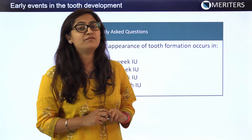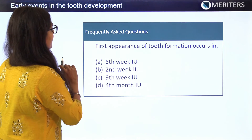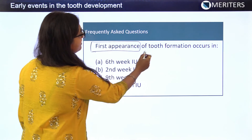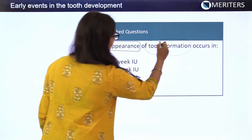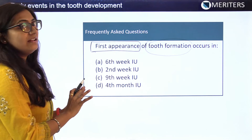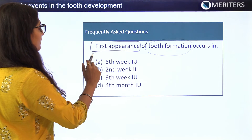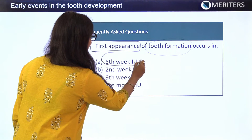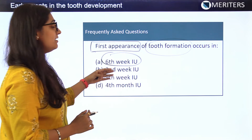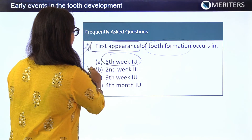Another fact-based question: What is the first appearance of tooth formation? This is a very easy question if you have gone through the theory. The first tooth formation occurs at around the 6th week of the intrauterine period. If you know the answer, you don't need to go through all the options. The correct answer is option A.